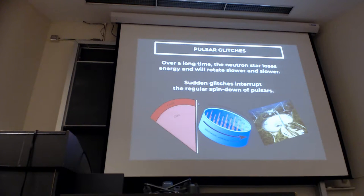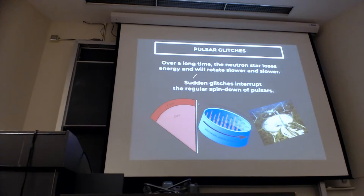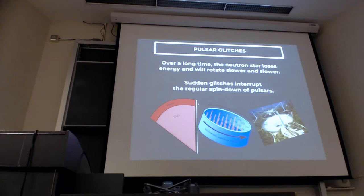That is what we call pulsar glitches. The neutron star normally spins down — its period increases, it rotates slower and slower — but if you look at neutron stars for long enough, you will sometimes see them not spin down but suddenly spin up. To understand this you need to combine all the things discussed earlier.